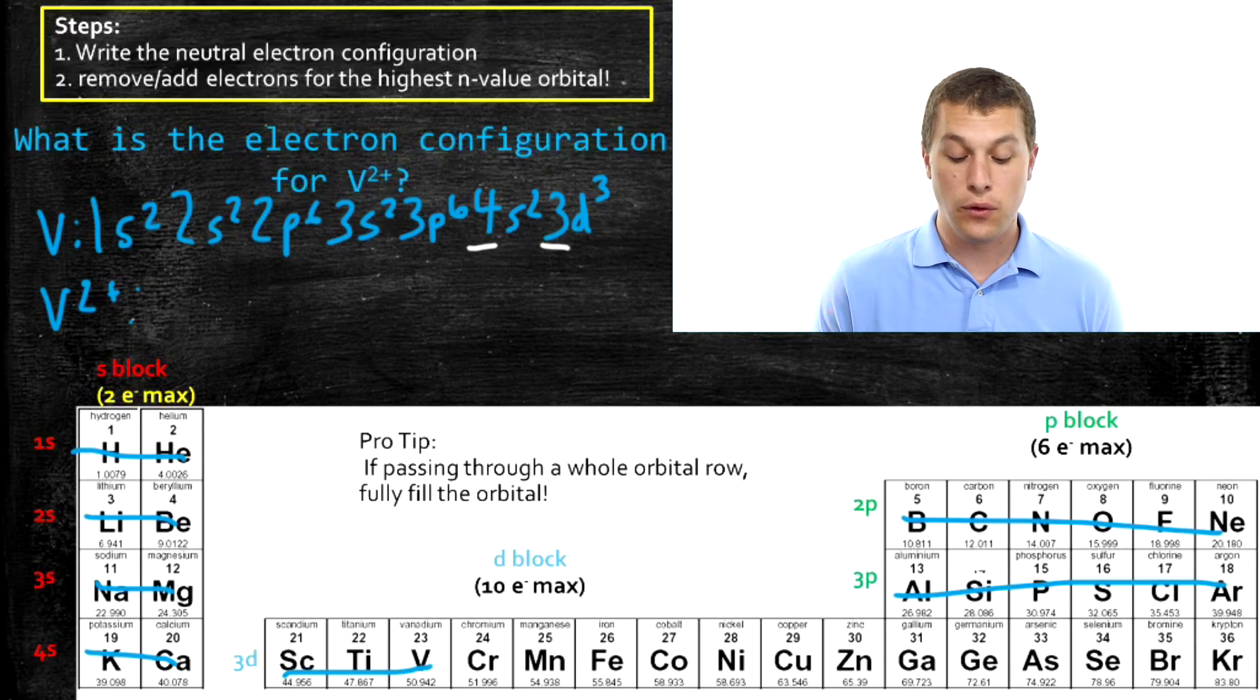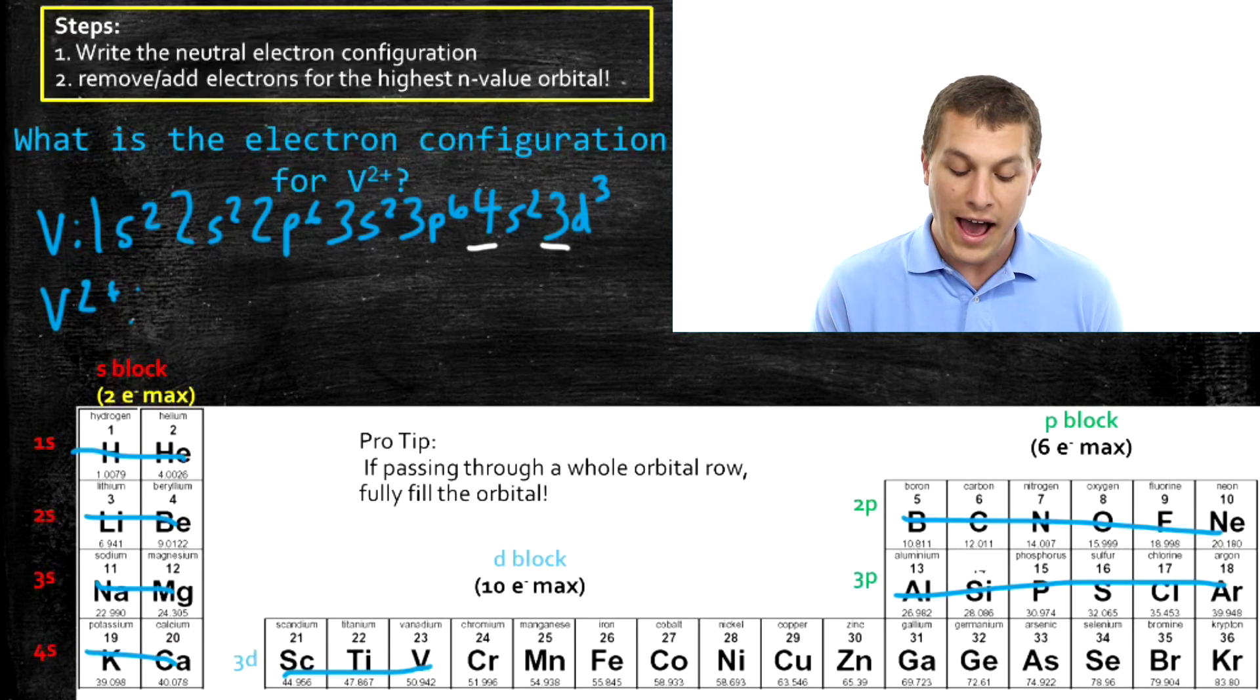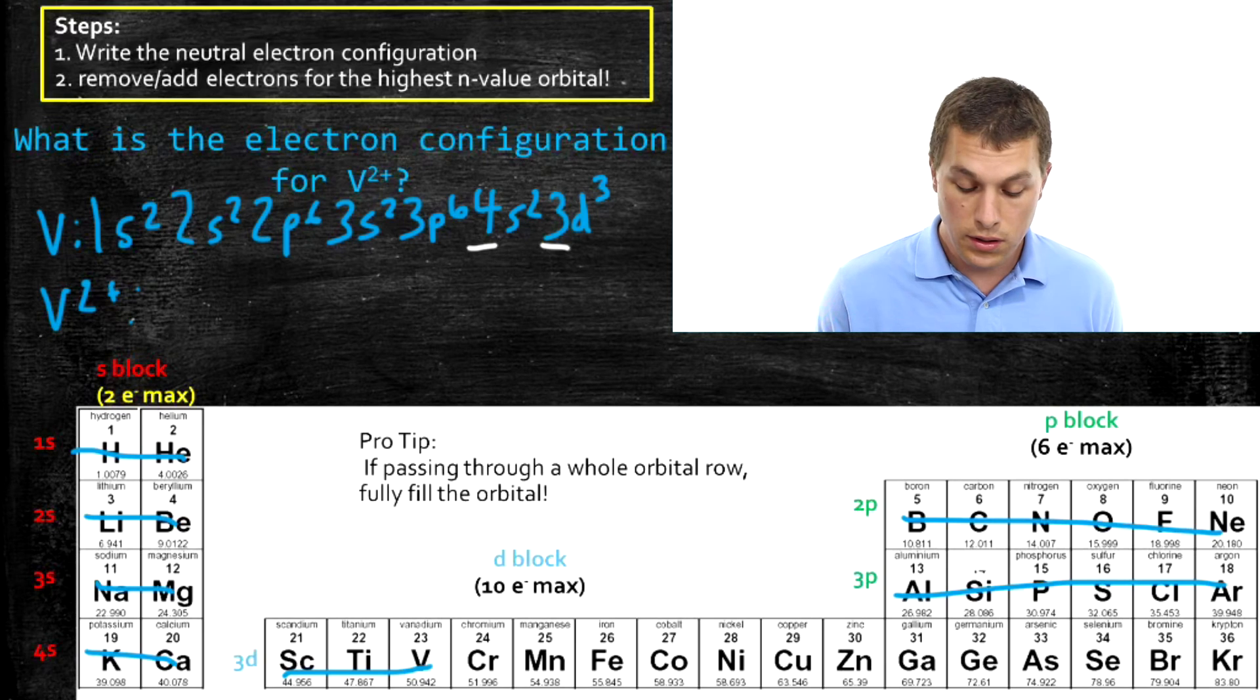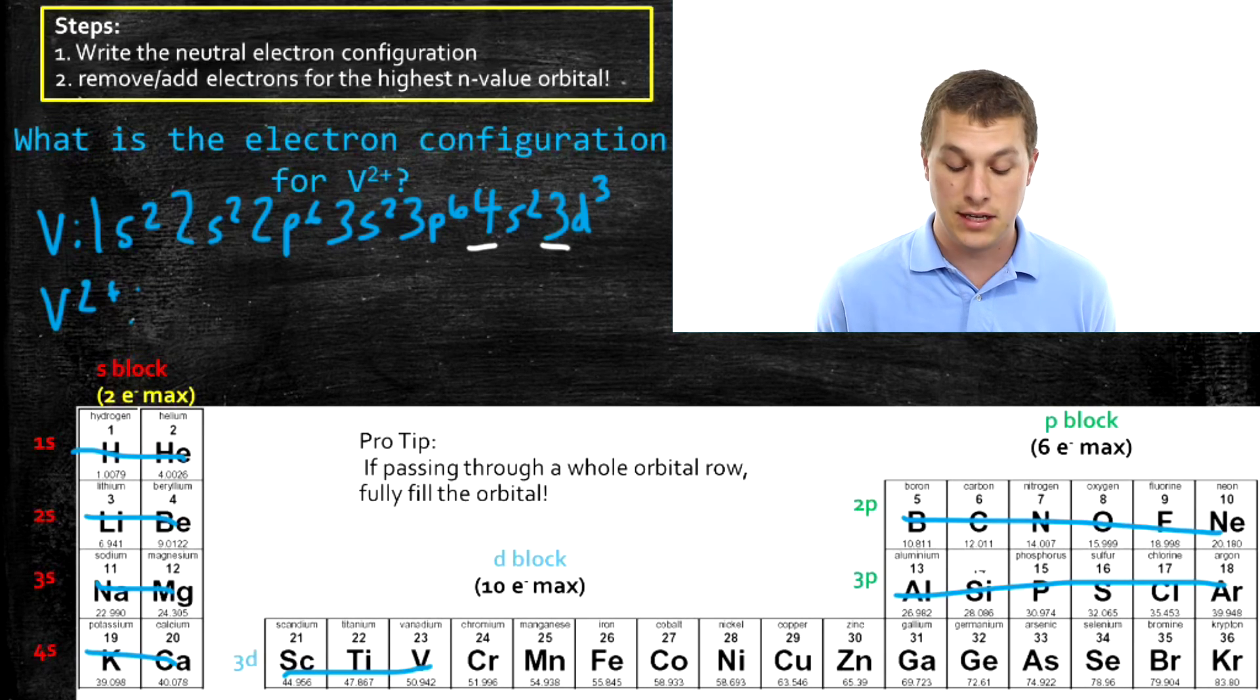It turns out that the 4S and the 3D are very close in energy. And so what actually happens here is we still just follow our rule, and remove it from the highest N value orbital.